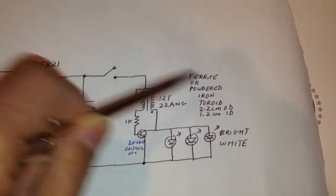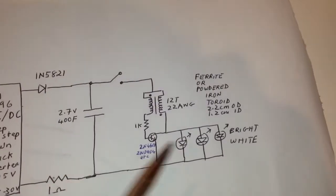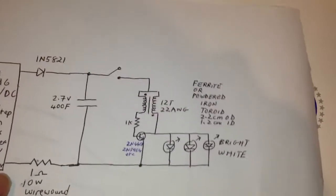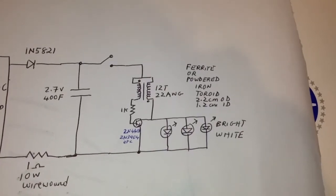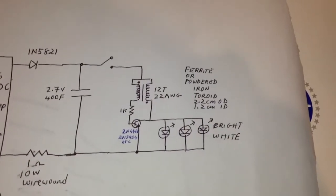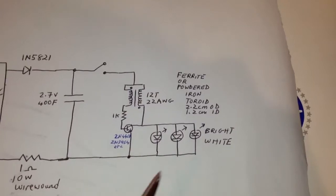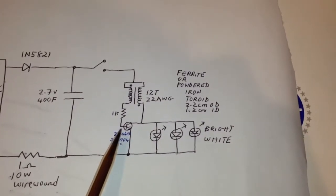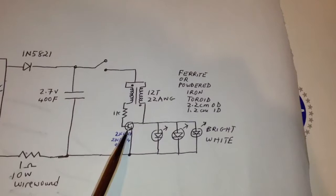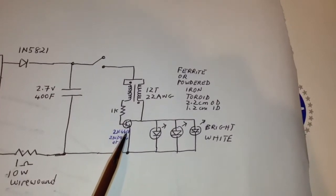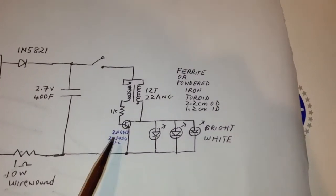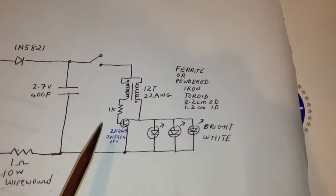I've got a switch in here and then this is just a standard dual-thief which is 12 turns of 22 gauge wire on a 2.2 centimeter powdered iron or ferrite toroid. The transistor, you can use pretty much anything. I'm using a 2N4401 but you can use any other N-type transistor.